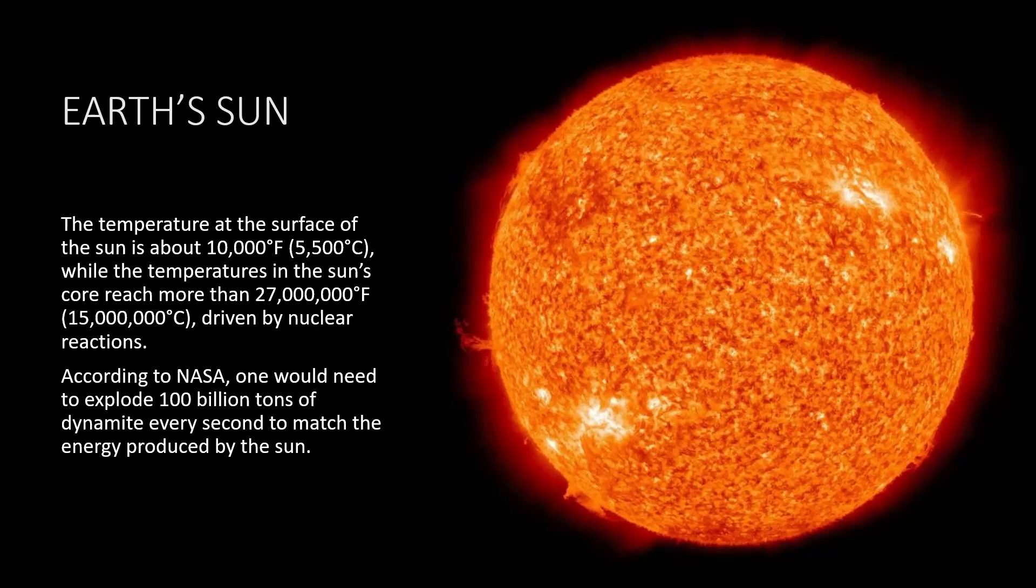So when you think about these humongous temperatures, we can live within a very limited temperature range. No matter what, those high temperatures, the Sun actually produces the light and heat we need on this planet to be able to exist. According to NASA, one would need to explode 100 billion tons of dynamite every second to match the energy production of the Sun. The Sun produces a humongous amount of energy and light and heat.